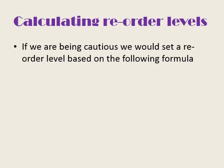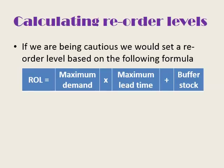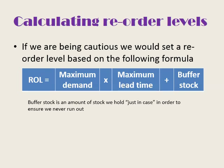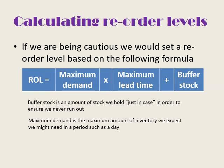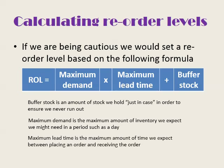How do we calculate these reorder levels? We're going to look at one particular method — one used if we're being fairly cautious about our reorder levels — using the following formula: Reorder level = (maximum demand × maximum lead time) + buffer stock. Buffer stock is stock we hold just in case so that we don't run out. Maximum demand is the maximum amount of inventory we expect to need in a given period, typically a day. Maximum lead time is the maximum amount of time expected between placing an order and receiving the goods.